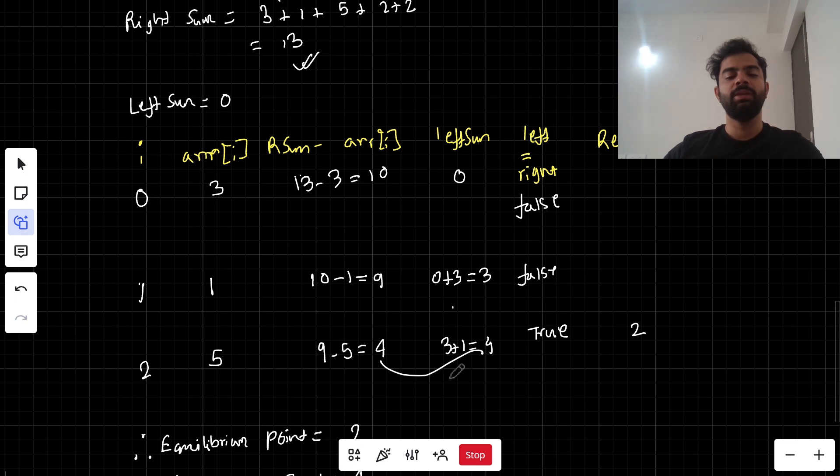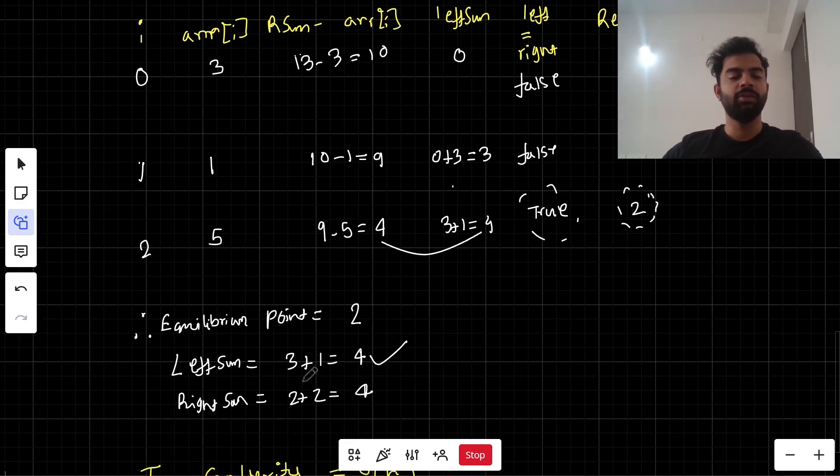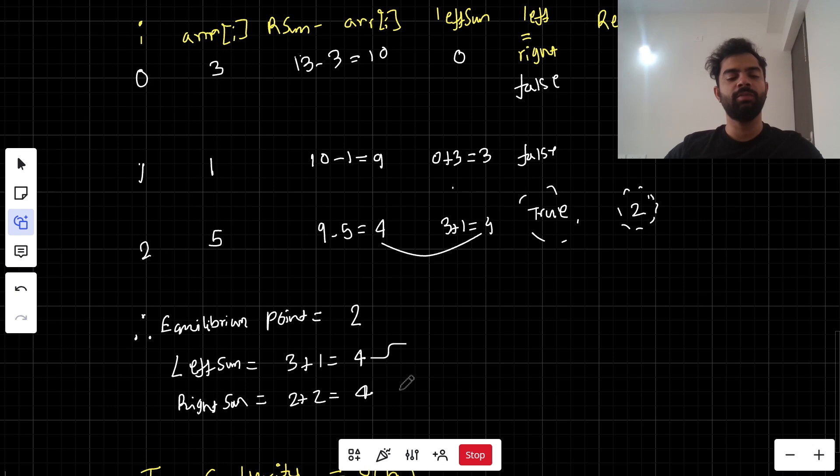Now left sum equals right sum, so there's a match condition found. We return true and the position where equilibrium is found is 2. The left sum value is 4 and right sum is also 4.